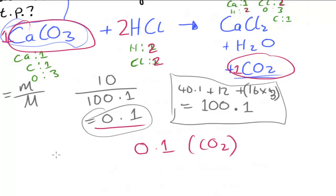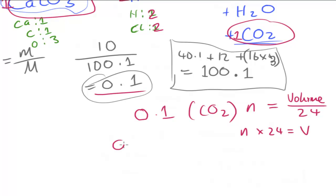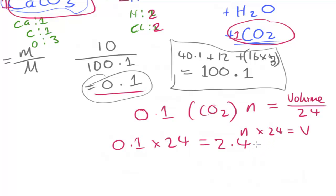Since decimetres cubed is the standard unit for volume, I'll use that. The equation is: number of moles = volume divided by 24. Multiplying both sides by 24: volume = number of moles × 24. So the volume equals 0.1 × 24, which gives 2.4 dm³. The volume of carbon dioxide produced is 2.4 decimetres cubed.